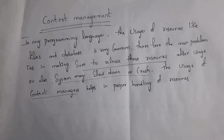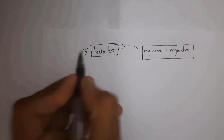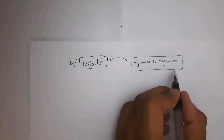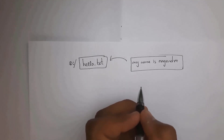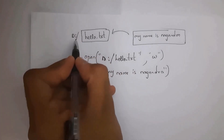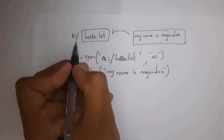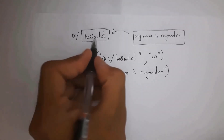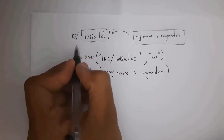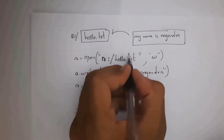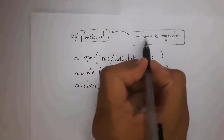In order to overcome this problem, we use context managers. By using context managers we can automatically close a file. For example, there is a text file on local disk D named hello.txt. I want to add the text 'my name is nagendra' into hello.txt. By using the open function you can open any file — I write here: a = open('D:\hello.txt', ...).